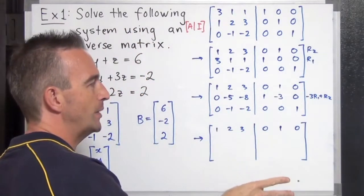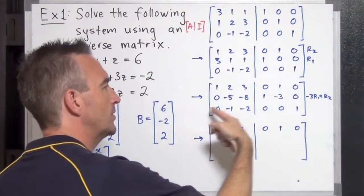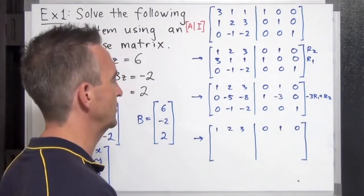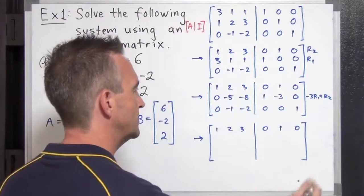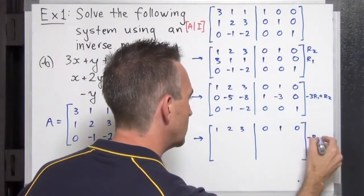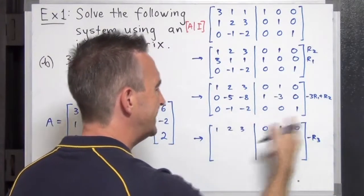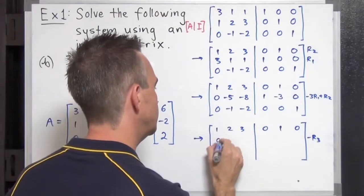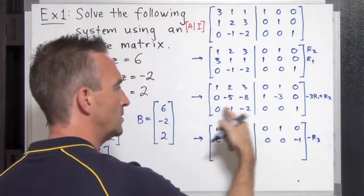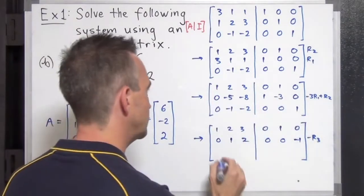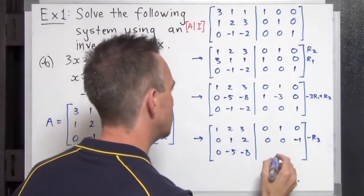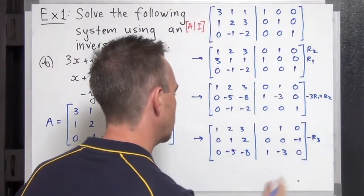Now we want a leading one in the second row, so I'm going to switch the second and third rows, and also multiply the third row by negative one. The second row becomes negative one times the third row: 0, 1, 2, 0, 0, negative 1. And the old second row copies down to the third position: 0, negative 5, negative 8, 1, negative 3, 0.